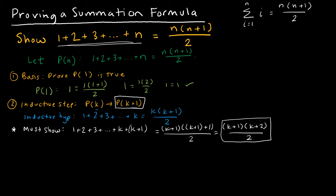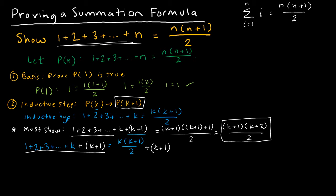So now I'm going to start the induction part of this proof. I start with the inductive hypothesis: 1 plus 2 plus 3 plus all the way through k. I'm going to add k plus 1 to this side, and on the right side I have k times k plus 1 over 2, and whatever I did to the left side I have to do to the right side. So the left side is exactly what I wanted — it matches what I must show. The right side, however, is not, so that's where I'm going to do all of my work.